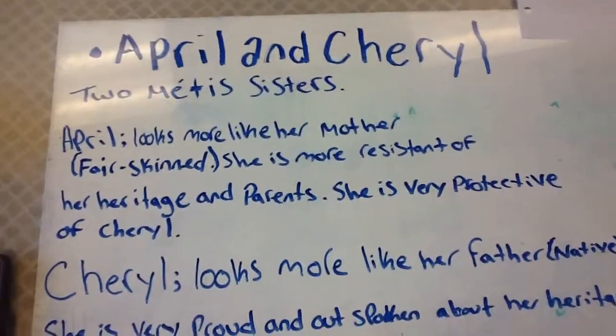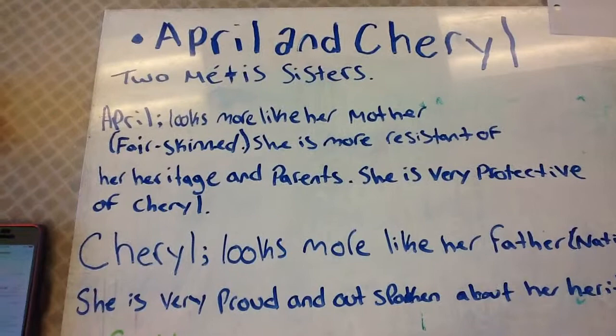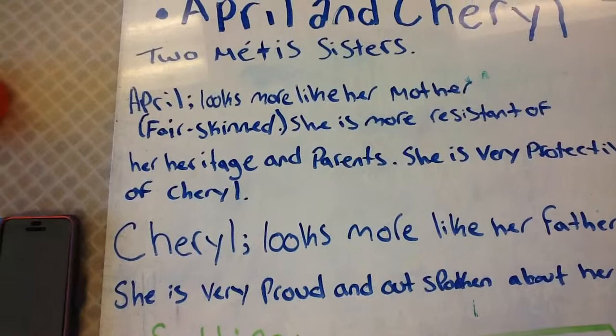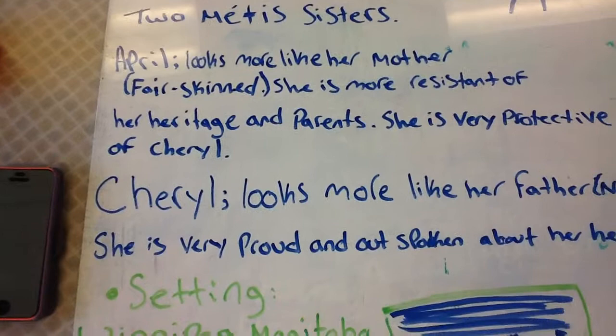I'm Emma, and me and Hannah are doing the book April Raintree. The two main characters are April and Cheryl. They're two Métis sisters. April looks more like her mother, so she's more fair-skinned. She is more resistant of her heritage and parents. She is very protective over Cheryl.